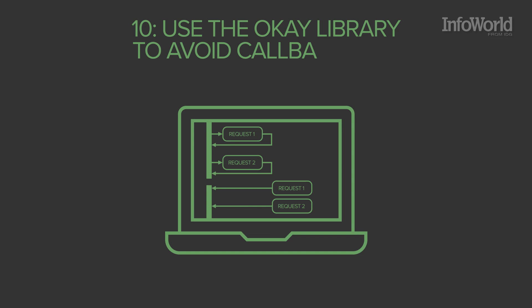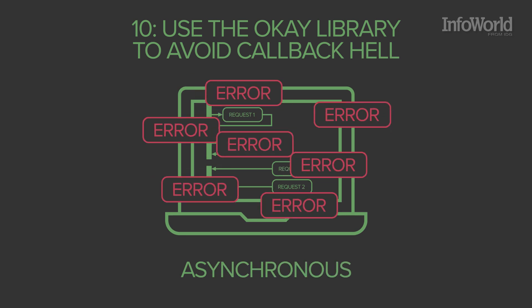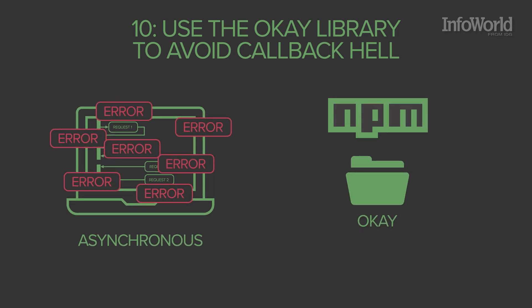It's hard to catch errors in asynchronous code unless you check every error return value in every callback. The resulting messy code is sometimes called callback hell. The NPM OK package allows you to easily bubble errors up your callback chain.